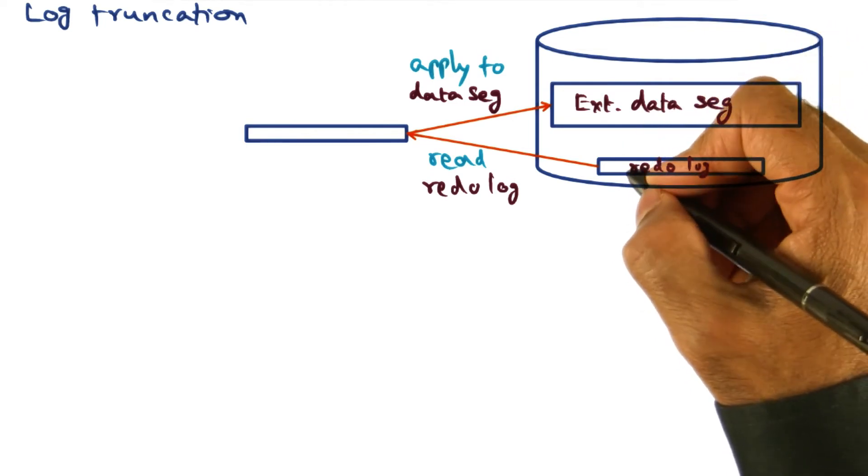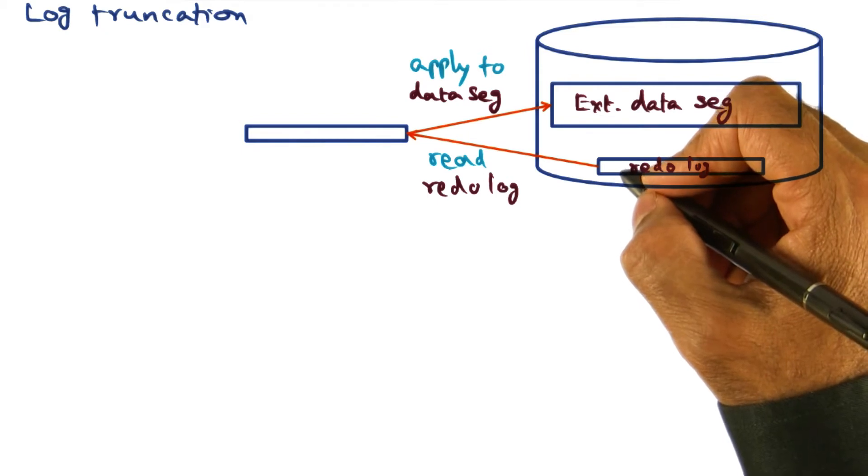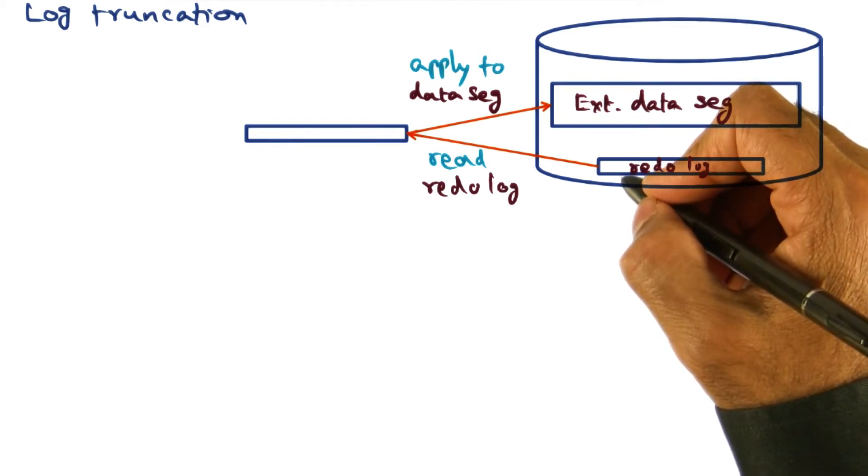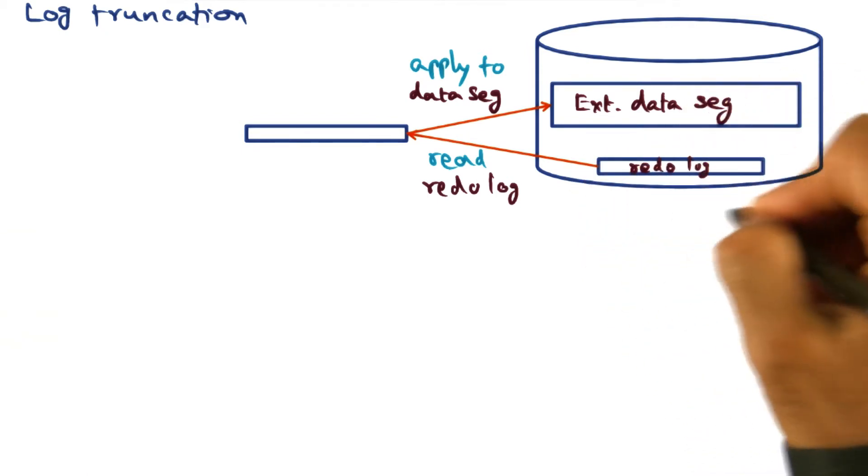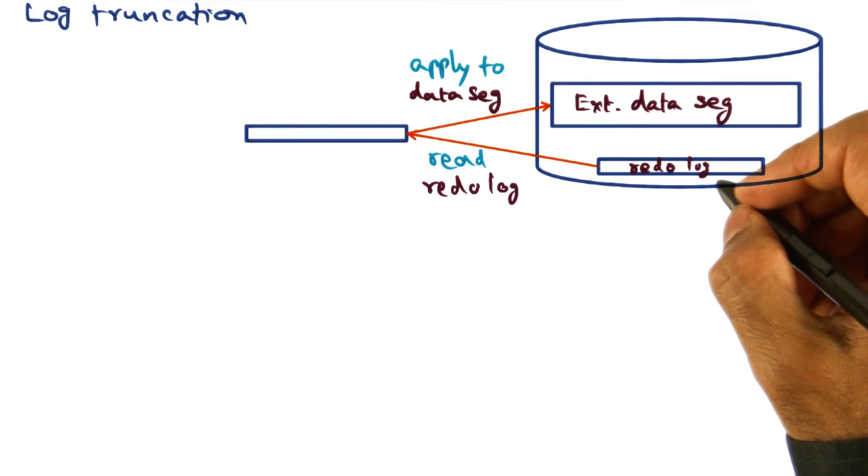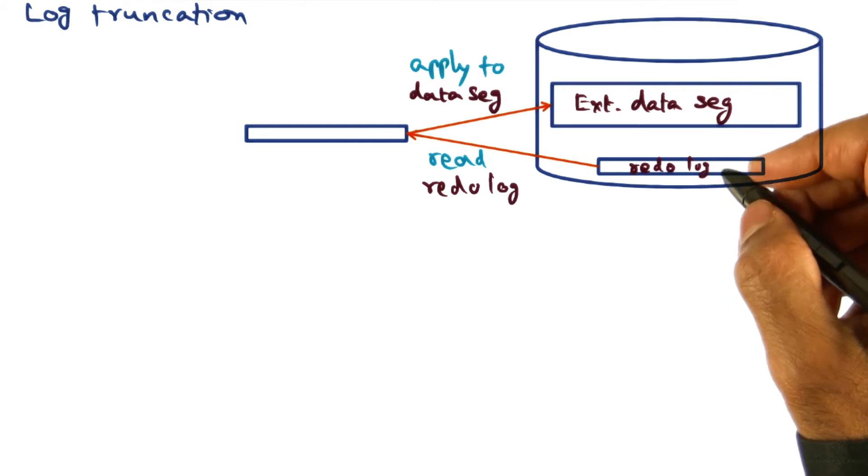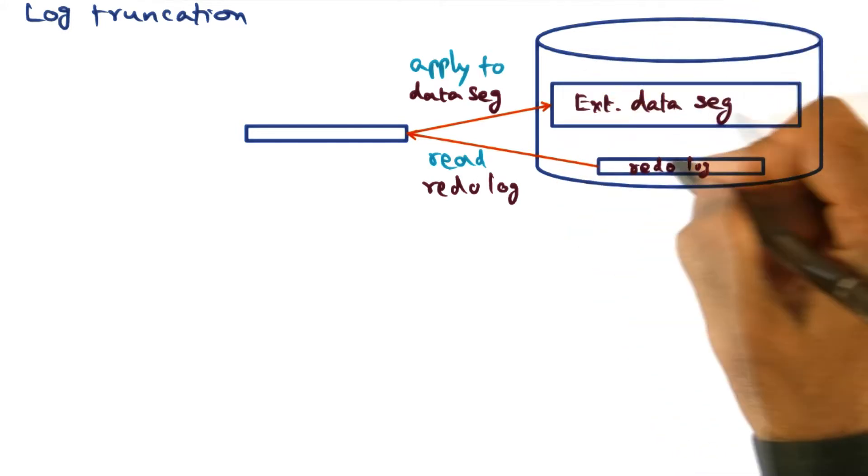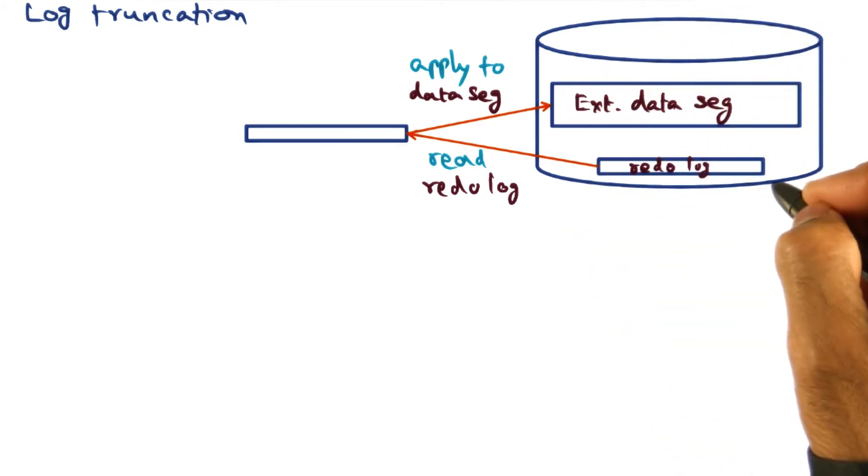Now the only time we're going to do that is when the crash happens, that's being very pessimistic. Also, we may end up clogging the disk with a number of redo log records. We've seen the need for log truncation in the distributed shared memory systems as well. In the case of DSM, those logs were clogging physical memory. In the case of LRVM, these logs are clogging the disk space.